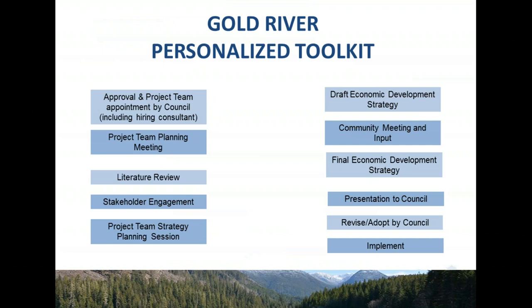The steps in the planning process are very logical and sequenced, beginning and concluding with the community values, as shown in the flow chart. This is how we interpreted the toolkit actions for Gold River. In more detail, we personalized the toolkit starting with municipal council's approval and hiring myself as consultant, through several project team meetings right down to the planning session, then drafting the strategy, holding a community meeting, finalizing the strategy, presenting to and adoption by council, and then into the implementation stage.